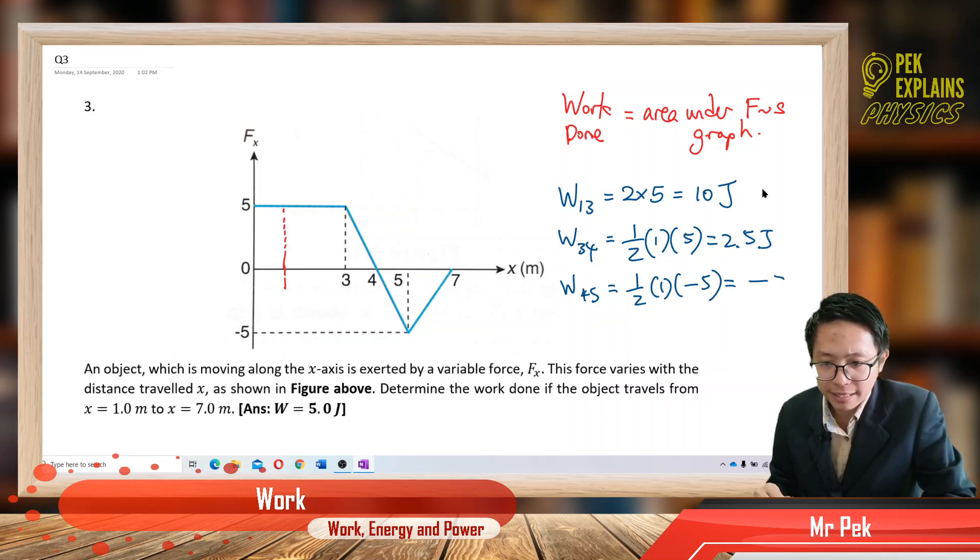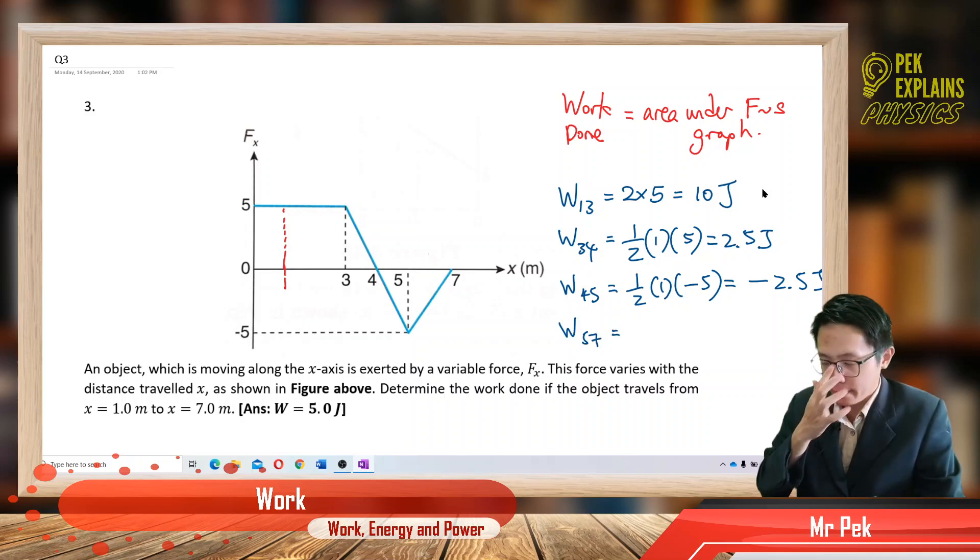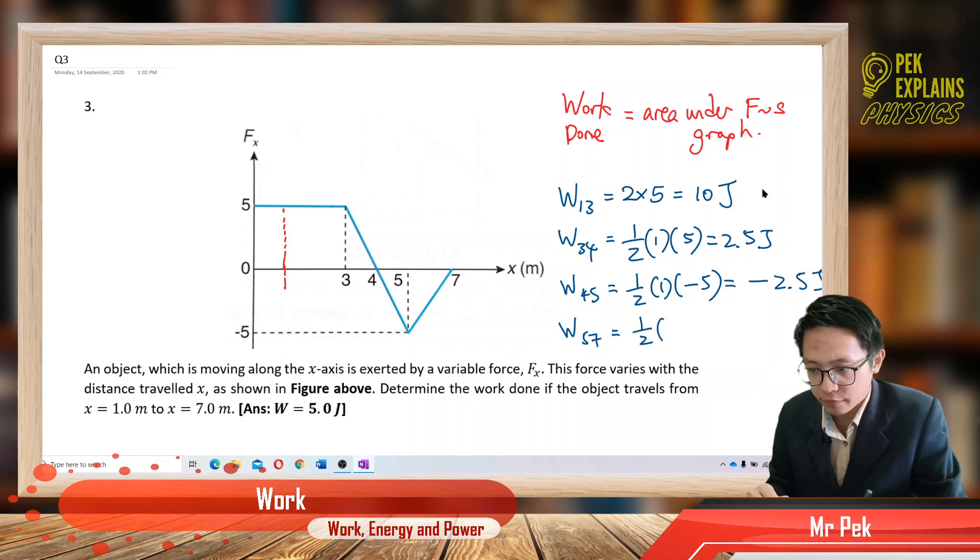And then work done for 5 to 7, it is another triangle, half times 2 times negative 5. So here we get negative 5 joules.